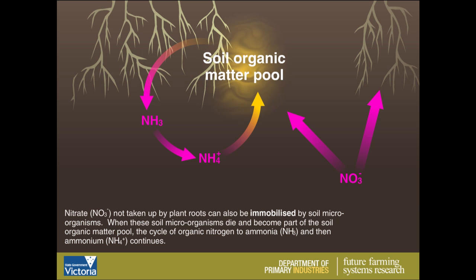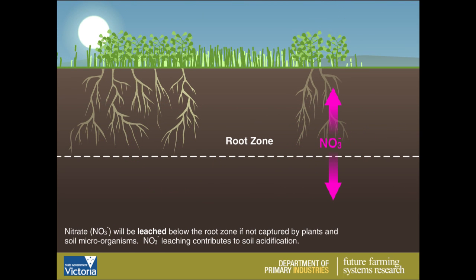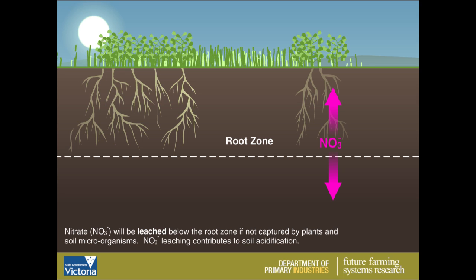Nitrate will be leached below the root zone if not captured by plants and soil microorganisms. Nitrate leaching contributes to soil acidification.